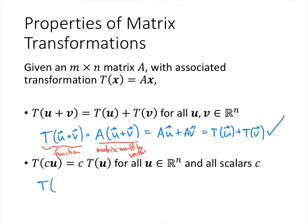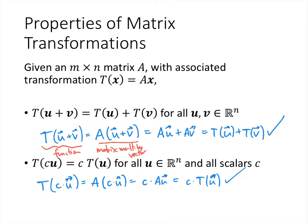Similarly, when we plug c times u into the transformation, that means matrix A multiplied by the vector cu. Another property of matrix-vector multiplication is that the scalar multiple can be pulled out, giving us c times Au, which is c times t(u). That proves the second property. So those are some nice properties that matrix transformations have.